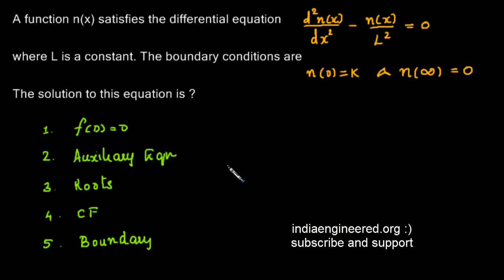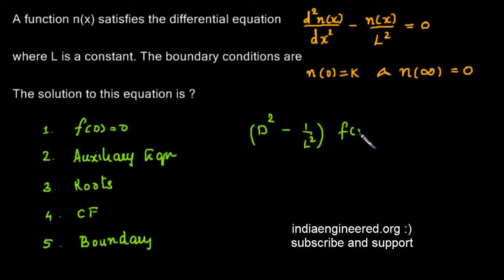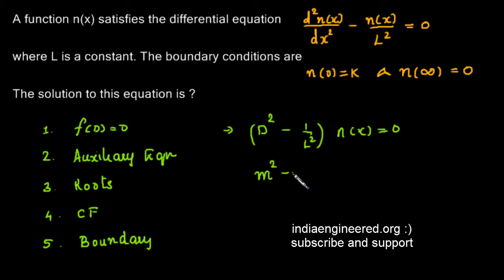First, we write in symbolic form: d²n(x)/dx² minus n(x)/l² = 0, which can be written as (D² - 1/l²)·n(x) = 0. This is the function in symbolic form. Now we can write the auxiliary equation in terms of m: m² - 1/l² = 0.